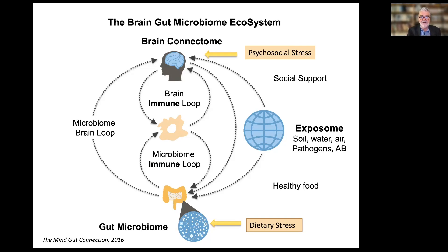You can see, characteristic of a complex system, there are bi-directional communication loops between the different nodes in this network, including the exposome or the environment, which is in integrated interaction and communication with the brain and the gut microbiome.